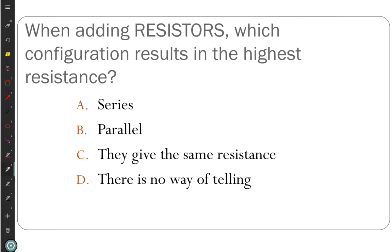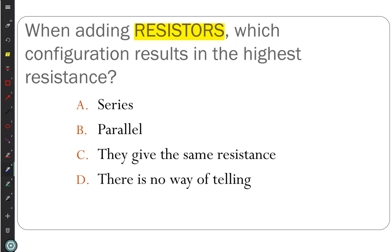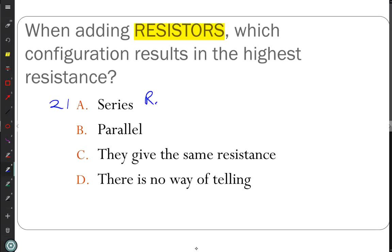Our next clicker question: when you add resistors, which configuration results in the highest resistance — series or parallel? Everybody answered series. When you put resistors in series, the resistance is bigger: R_series equals R1 plus R2 plus R3, and so on.